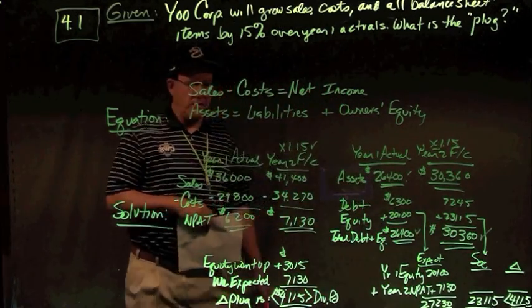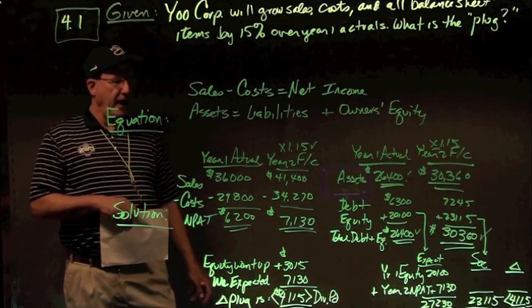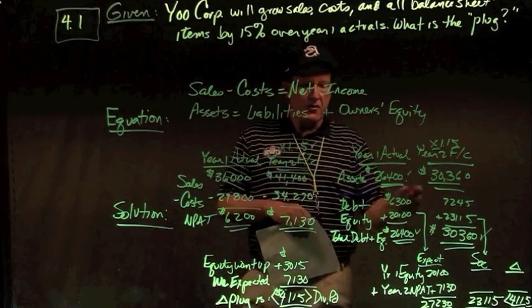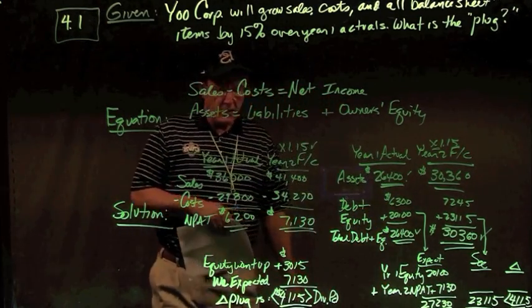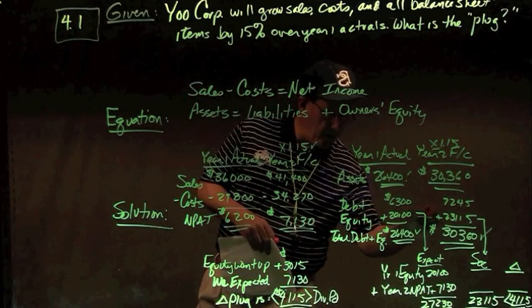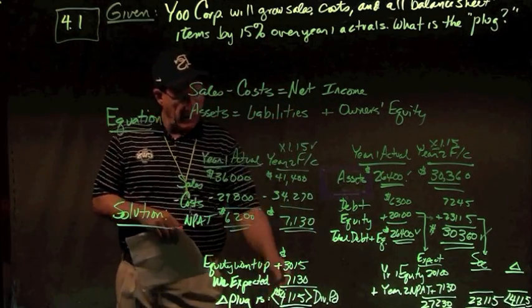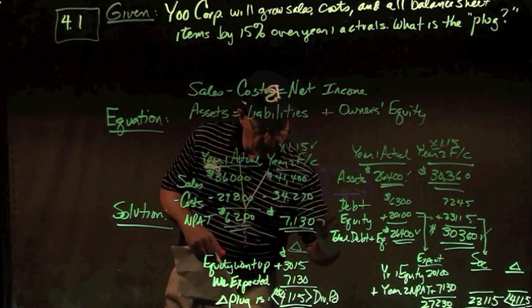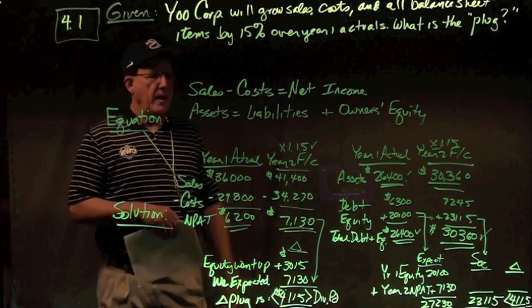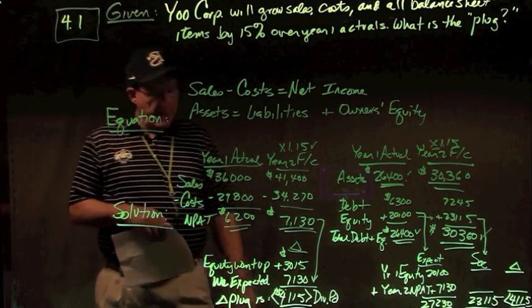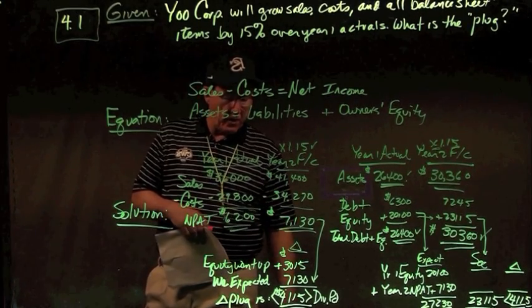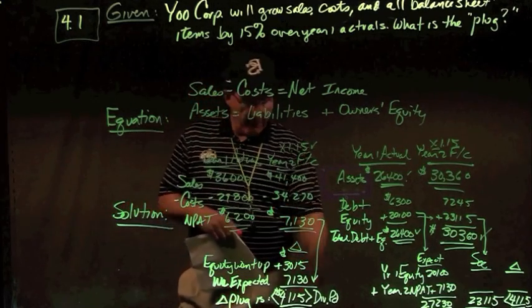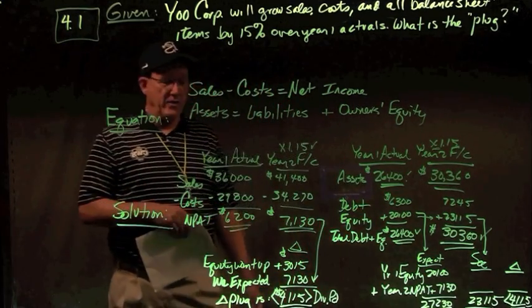So the question is, what is the plug? This is different than what is shown in the text, where we're trying to find the plug with the balance sheet out of balance. Here the balance sheet is balanced, so management must have done something to balance things. So my equity went up from 20,100 to 23,115, or a delta of 3,015. I expect all my net income to go into the equity account, not being told anything different. So I have a difference of $4,115, so my dividends paid is the plug.